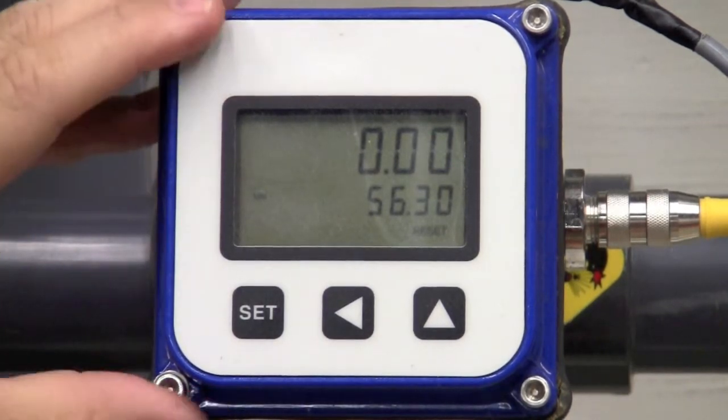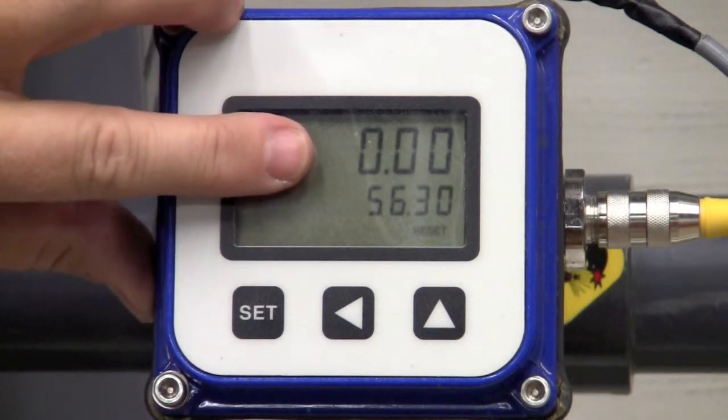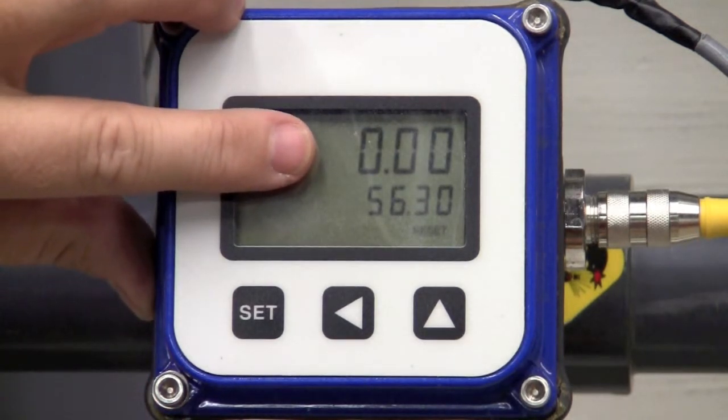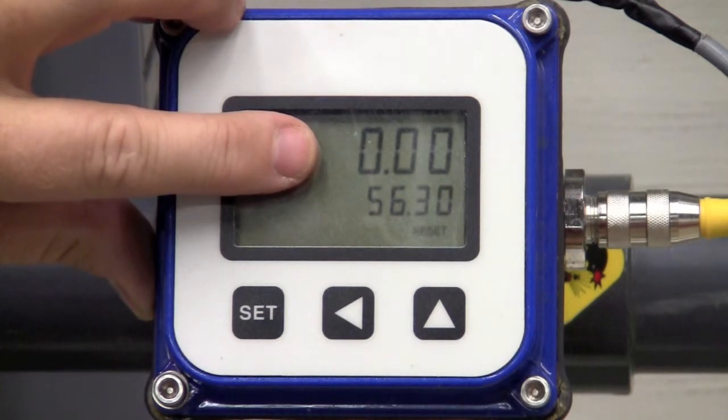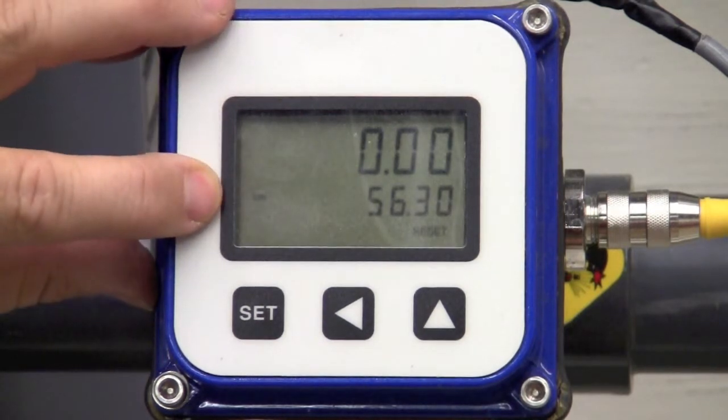What you see on the display, first off, it's a two-line display. The top line will show your instantaneous flow rate in gallons per minute, gallons per day, whatever you set up. Currently, we're not flowing, so we're reading 0.00 GPM.